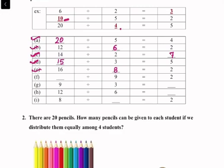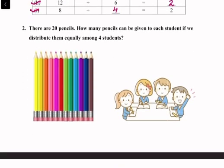(f) blank divided by 9 is equal to 2 — the answer is 9 into 2 = 18. (g) 9 divided by 3 is equal to 3, so 3 into 3 = 9. (h) 12 divided by 6 is equal to 2, so 6 into 2 = 12. (i) 8 divided by blank is equal to 2, so 2 into 4 = 8.